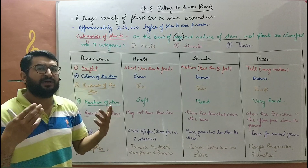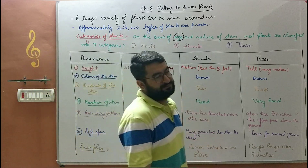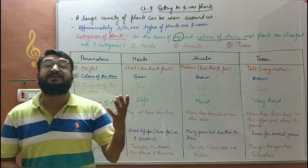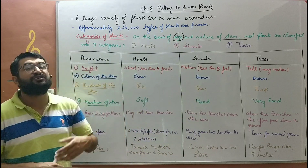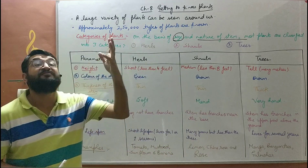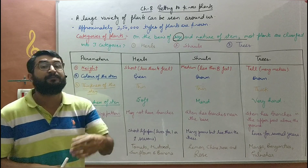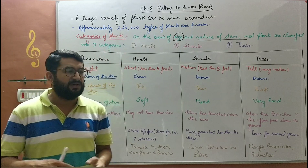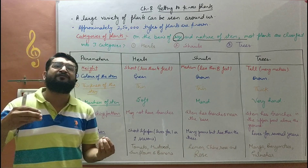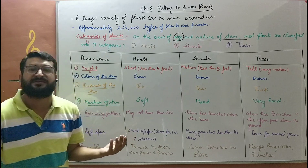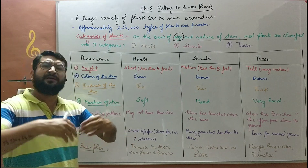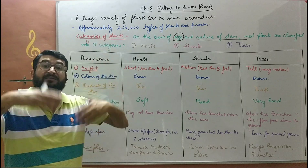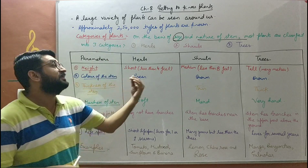Eight feet is quite a good height, but trees are tall — many meters in height. Pine trees can reach up to hundreds of meters, eucalyptus up to 30 meters, and mango trees can easily reach 12 to 15 meters. Trees are the tallest among all three categories.